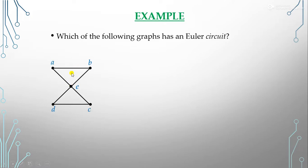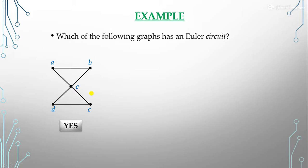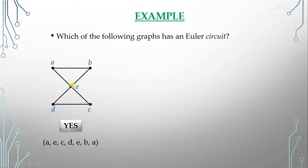Our first graph has five vertices a, b, c, d, and e, with six edges. This graph forms an Euler circuit. The path is a, e, c, d, e, b, a — all edges are covered without repeating any edge. Note that vertices may be repeated in an Euler circuit, but edges must not be. We start and end at vertex A, confirming it is an Euler circuit.